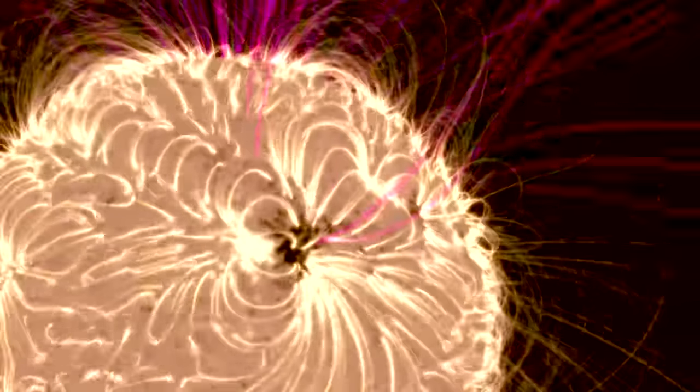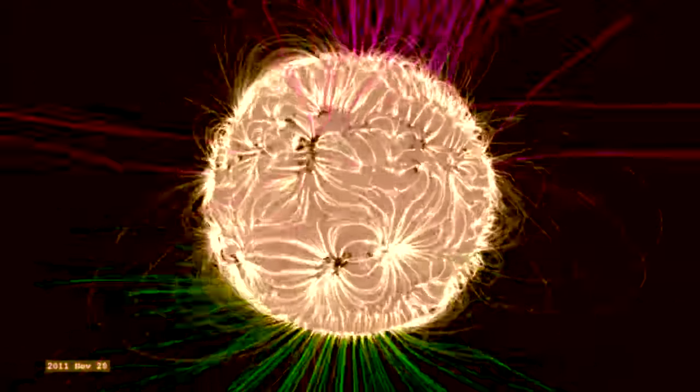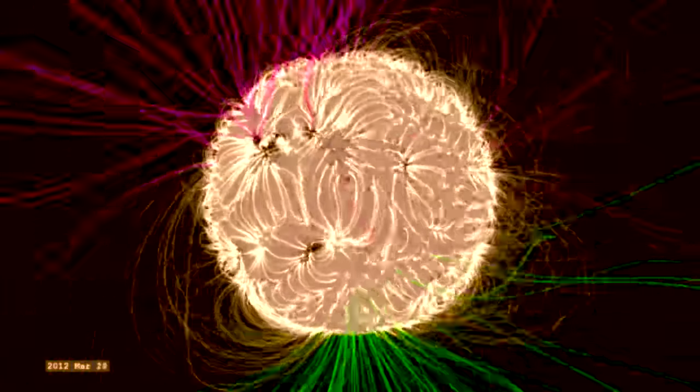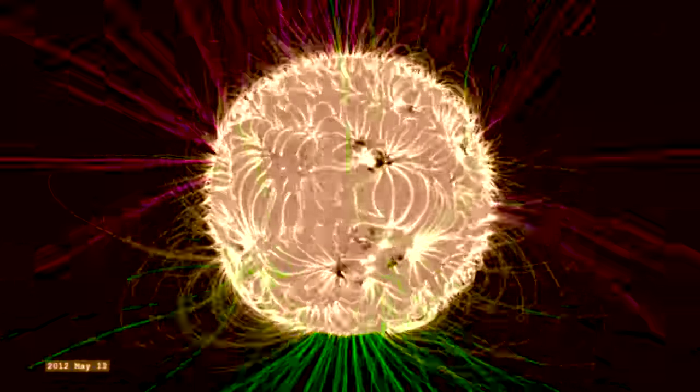Now you can see how beautifully dynamic the sun is as well. Magnetic field lines interact with each other. They cause big explosions to occur on the sun and that's one reason it's extremely important to study the magnetic structure of the sun, especially on a global scale.